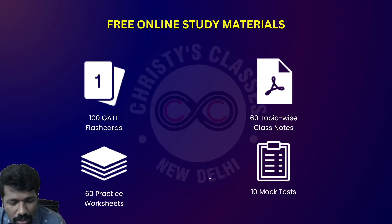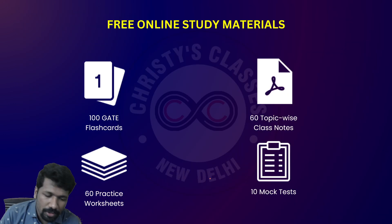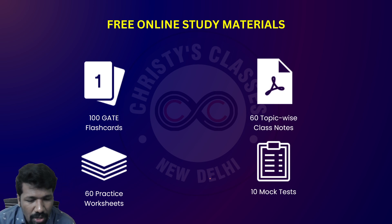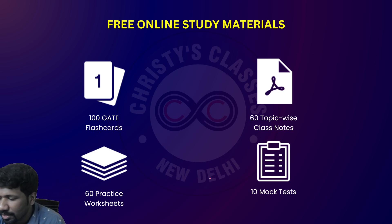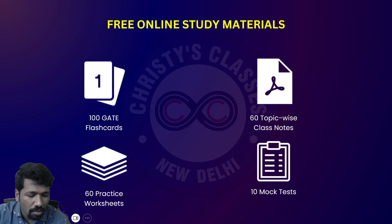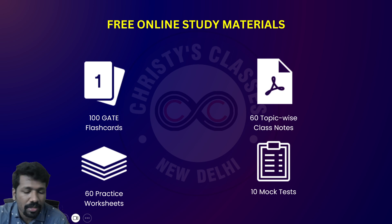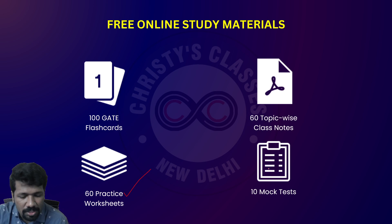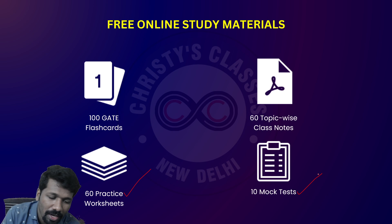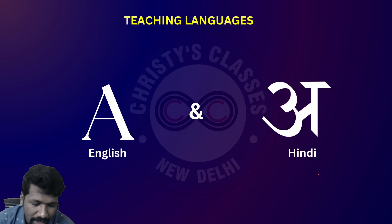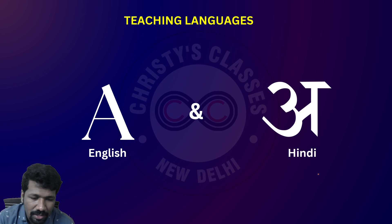Secondly, what materials will you get along with this course? There are free online study materials you will be getting with this course: 100 unique flashcards for GATE General Aptitude, 60 topic-wise class notes — that is, after each class, wo class ka notes you will be provided as a PDF material. And 60 practice worksheets bhi hoga. 10 mock tests bhi hoga in this course. Teaching language, just like this video, will be a mix of English and Hindi.